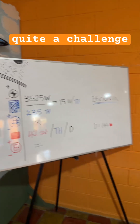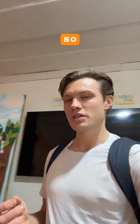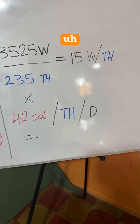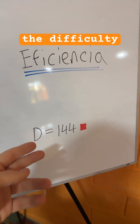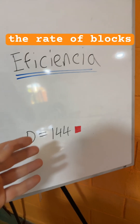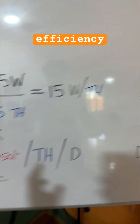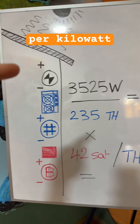It's quite a challenge teaching Bitcoin mining, especially to an audience that may not have all of the fundamentals. I was about to explain hash price, but understanding hash price requires knowing what the difficulty adjustment is, the rate of blocks on an average of every 10 minutes — explaining efficiency and hash price together to get your Bitcoin per kilowatt hour.